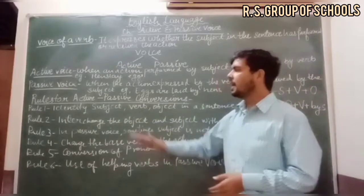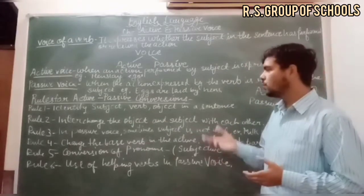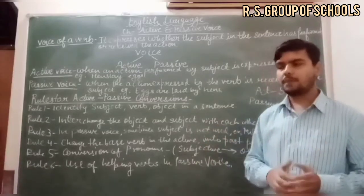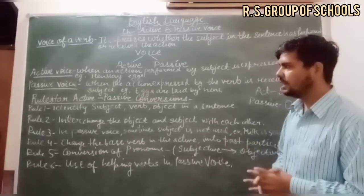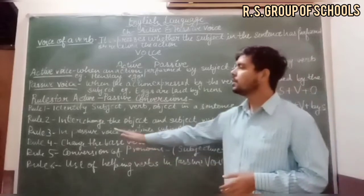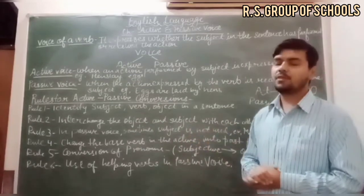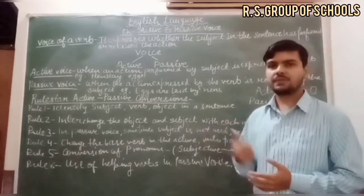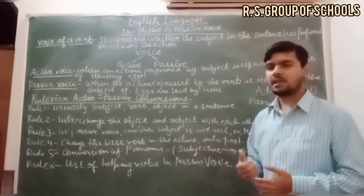The second rule is interchanging the object and the subject with each other. When converting, you must arrange the subject and object carefully so that the sentence is in a correct order and conveys the right meaning. Rule 3: in passive voice, sometimes the subject is not used. The best example is 'Milk is sold in liters.'